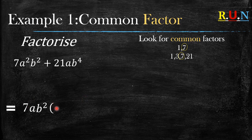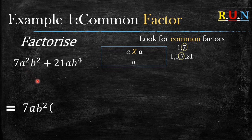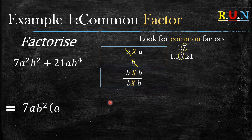Seven divided by seven goes to one, so we don't write the one. What's a squared divided by a? When working with letters we subtract the exponents — a squared is like a times a, and a is just one a. So when you cancel, only one a is left. What about the b's? b squared divided by b squared — both b's cancel out, meaning we don't write any b there.